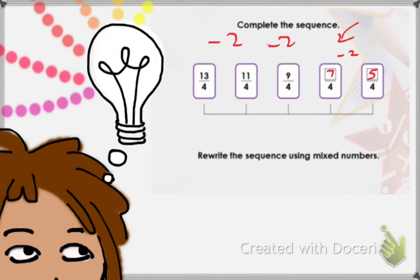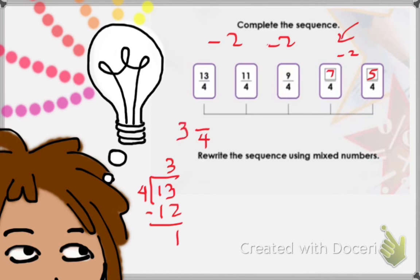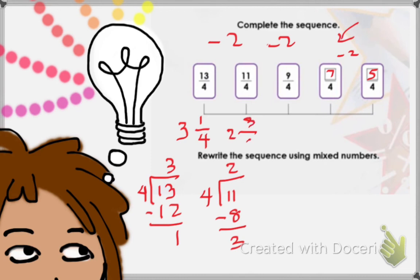For 13 over 4, we rewrite it as a mixed number: how many 4s go into 13? We have 3, because 3 times 4 equals 12, and 13 take away 12 is 1. So we have 3 whole and numerator 1 — that is 3 and 1 fourth. For 11 over 4: how many 4s go into 11? We have 2, because 4 times 2 equals 8, and 11 take away 8 equals 3. So we have whole number 2, numerator 3, denominator 4 — that is 2 and 3 fourths.